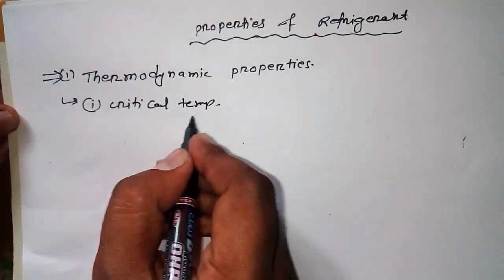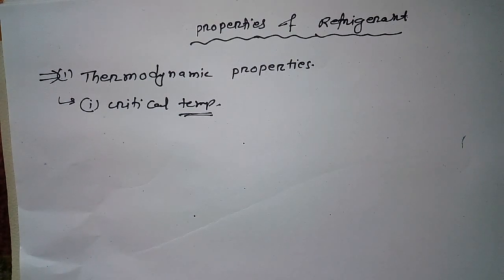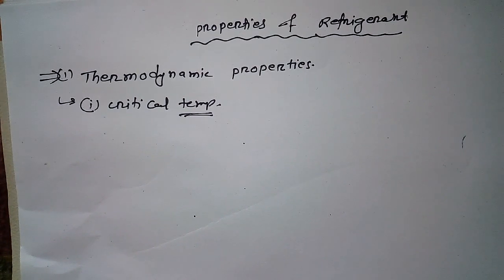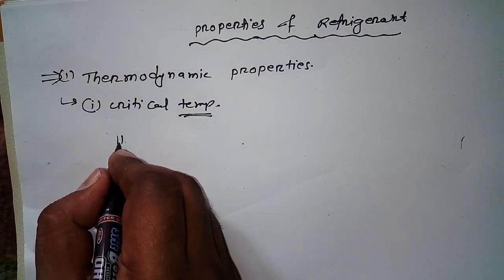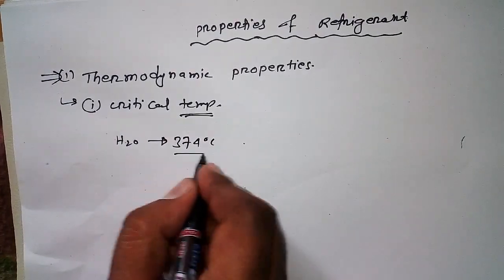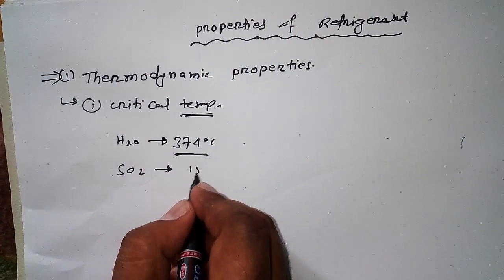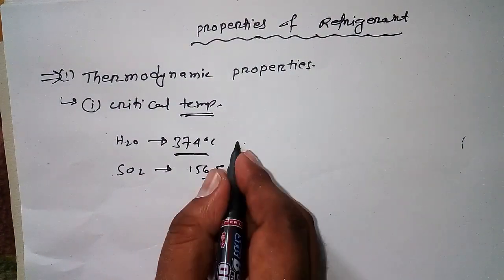The first property we'll discuss is critical temperature. Temperature is about finding out the degree of hotness or coldness of a system. Critical temperature means the topmost temperature — how far up the value the substance will exist. For example, if we see water, its critical temperature is 374 degrees centigrade.